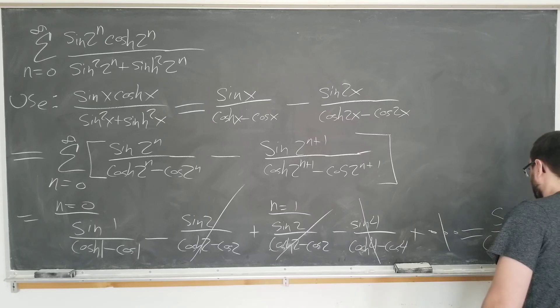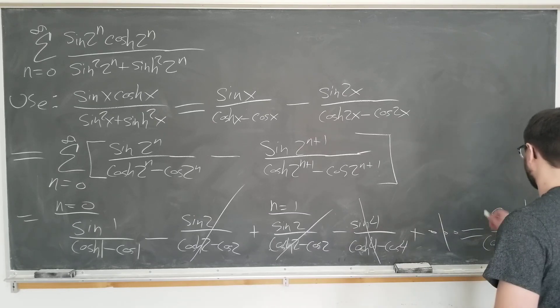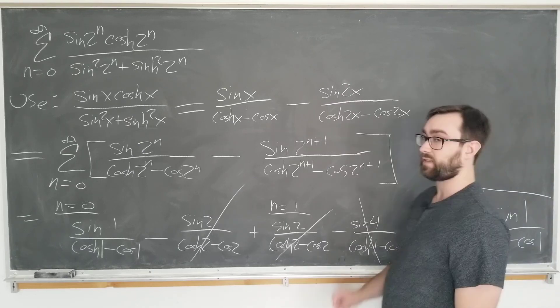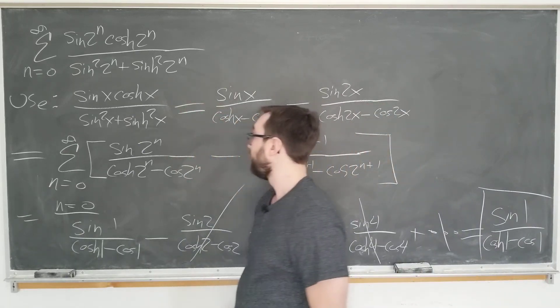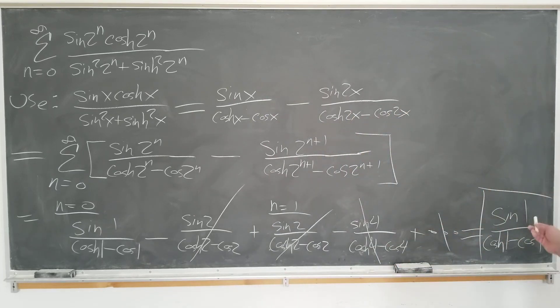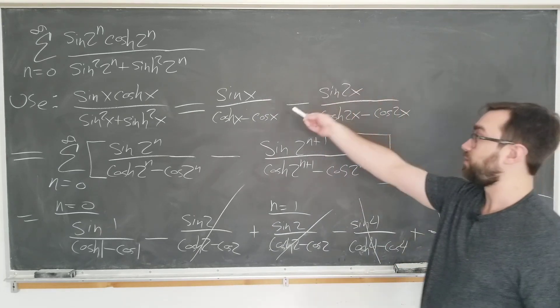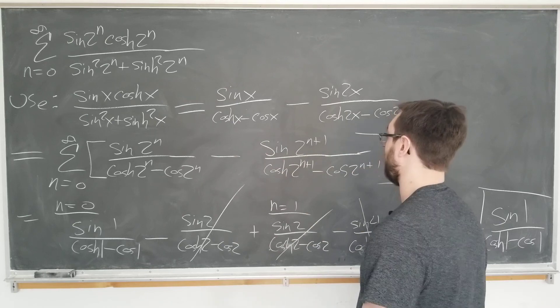Which is sine 1 over cosh 1 minus cos 1. This is actually the answer that we seek. And it's pretty straightforward. Just the first value.